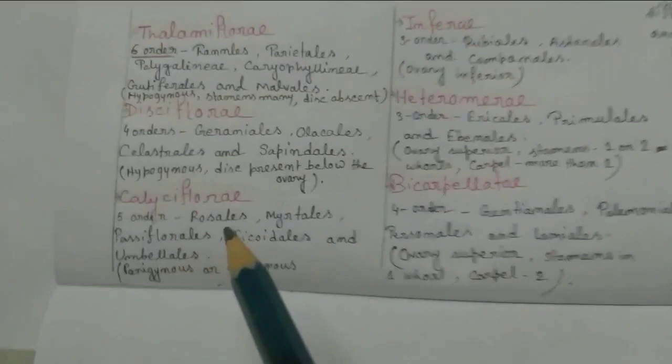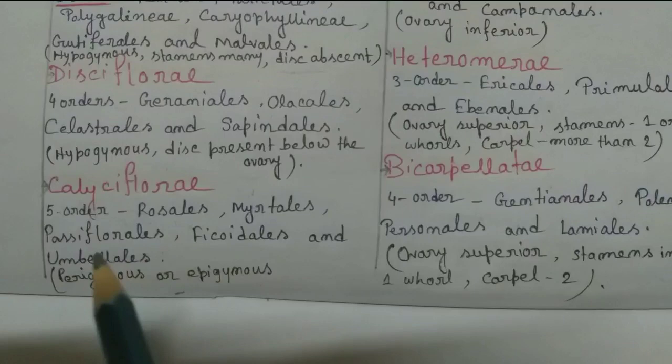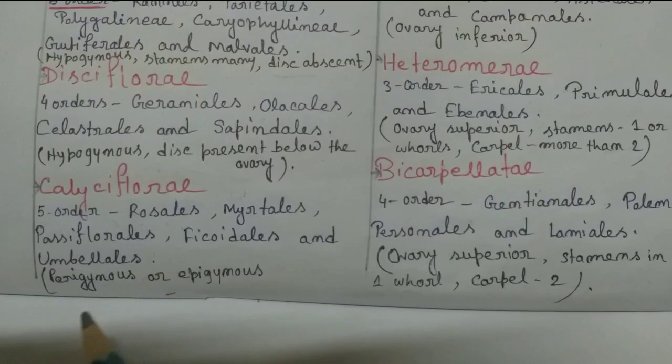Calyciflorae is divided into five orders: Rosales, Myrtales, Passiflorales, Ficoidales, and Umbellales.